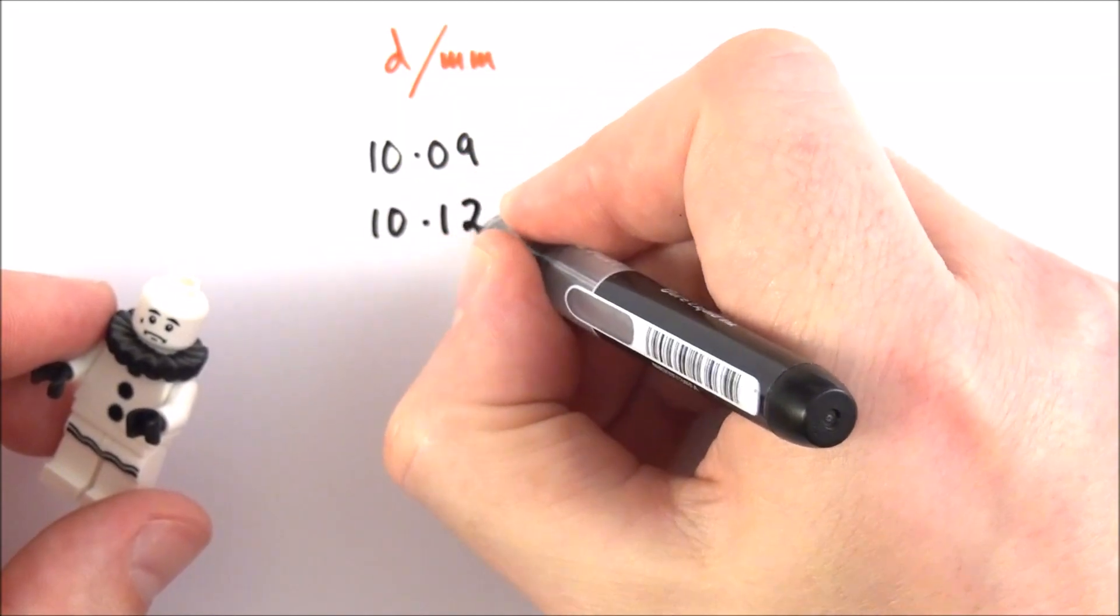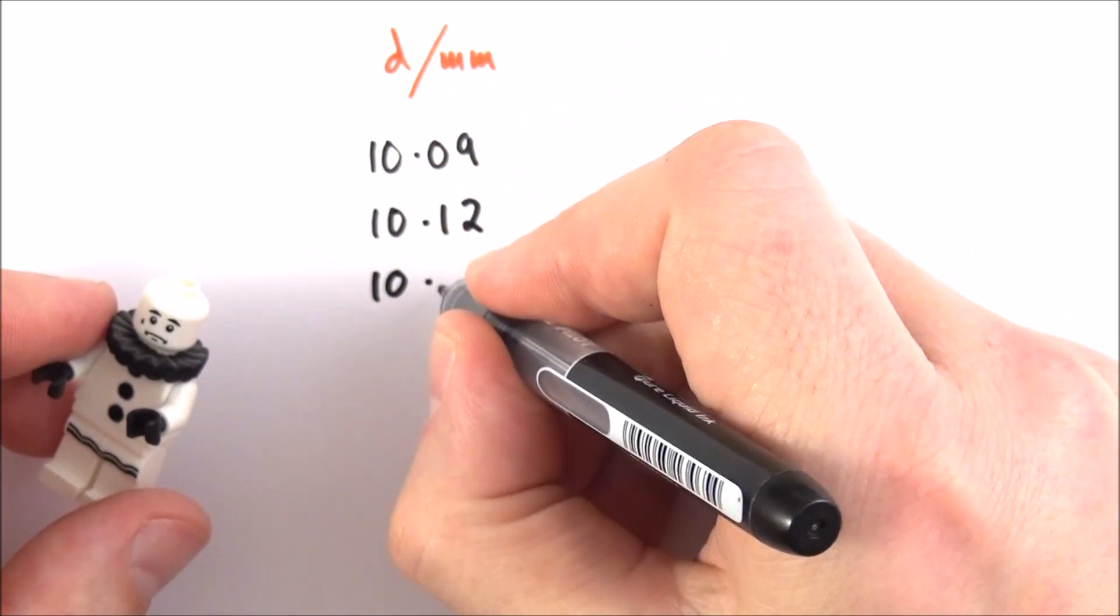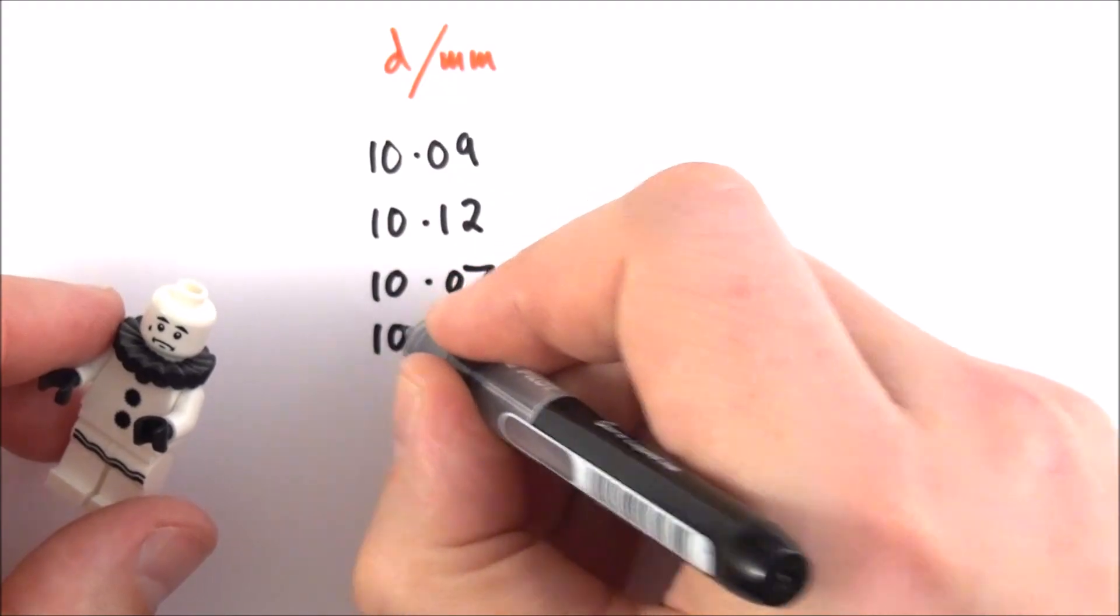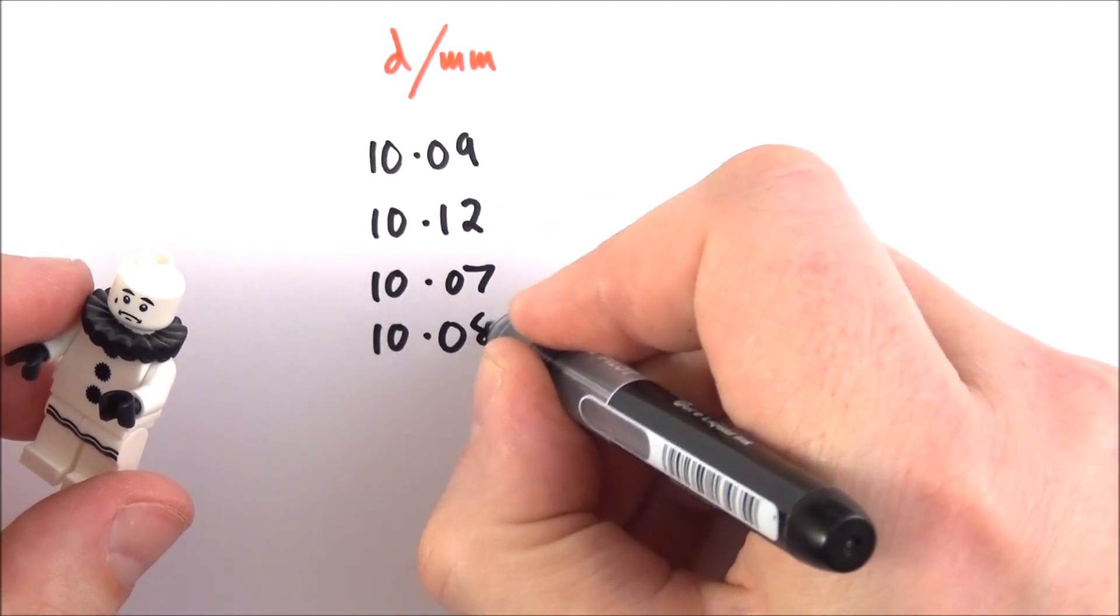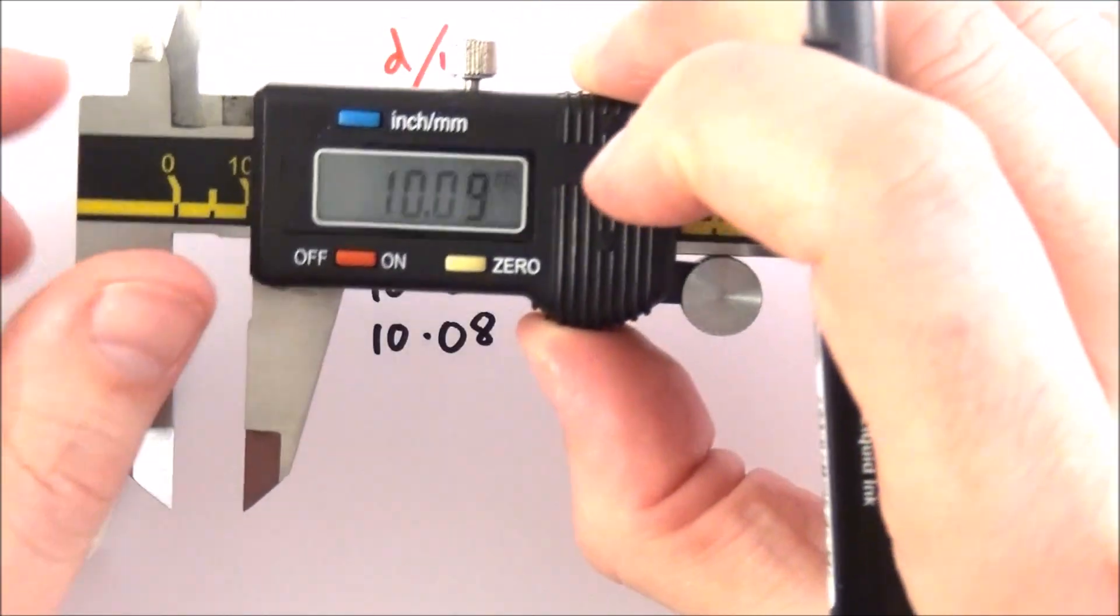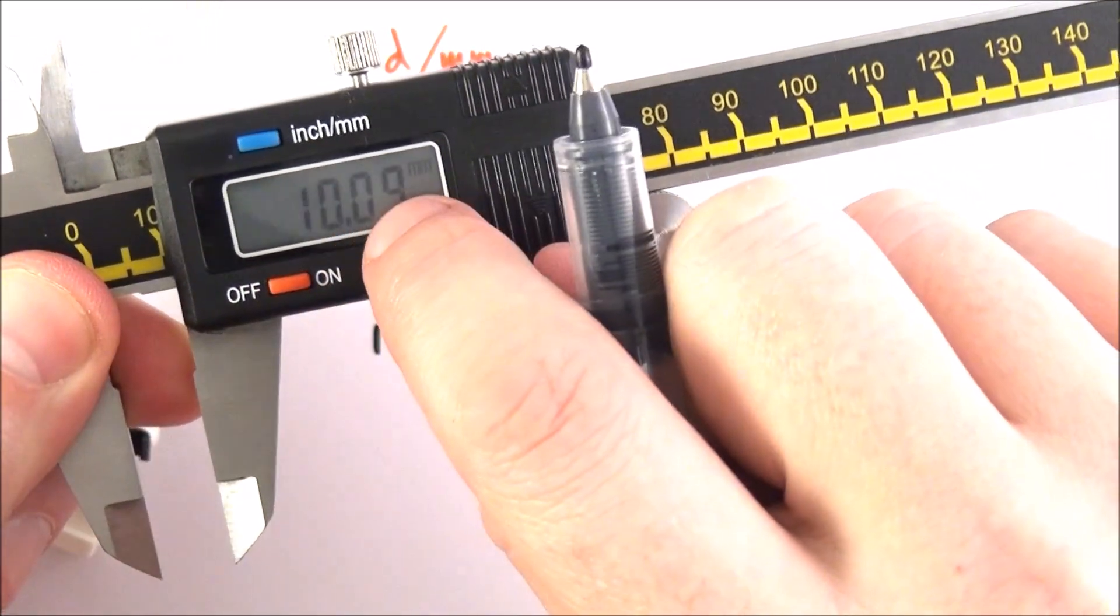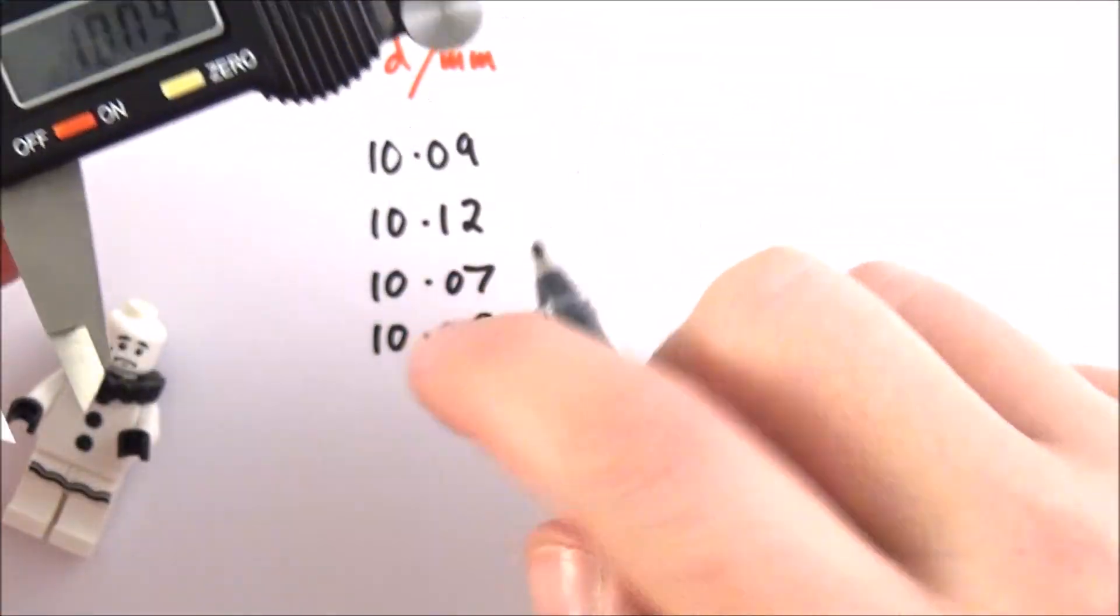And I did this earlier, as you guessed. I also got a value of 10.08. Now each time what I'm doing is I'm writing down the full display on this digital display, so all of these are going to be two decimal places.